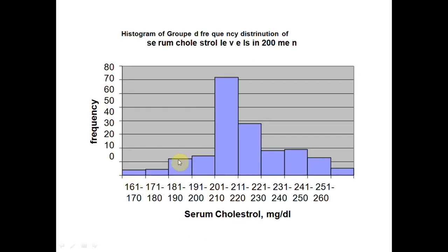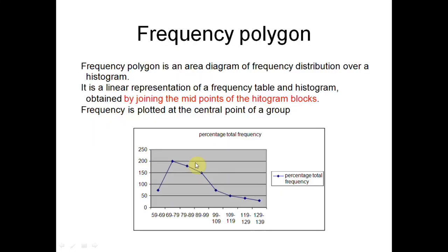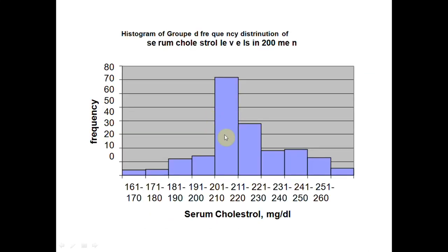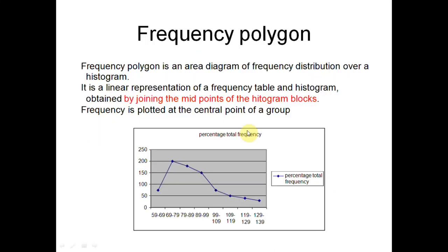If we mark the midpoint of each histogram block and connect them by a line, it becomes a frequency polygon. So a frequency polygon is formed by joining the midpoints of the histogram blocks with a line.